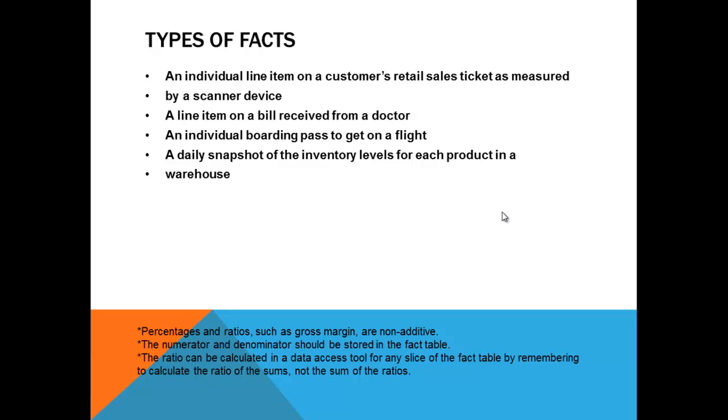But you can divide these facts into three types: additive, semi-additive, non-additive. Why we divide these into three facts? You have seen the list of the possible facts, right? But in the list of possible facts, you cannot sum up the numbers all the time. You will have to be very careful while summing up the numbers.